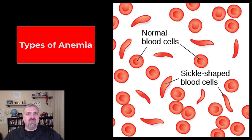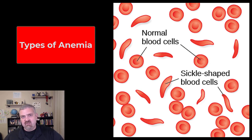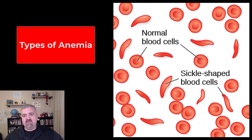Then lastly, you have what's called the thalassemias. Thalassemia is a genetic inherited condition where red blood cell maturation doesn't occur like it should, so you won't have the normal number of healthy, fully functioning red blood cells.